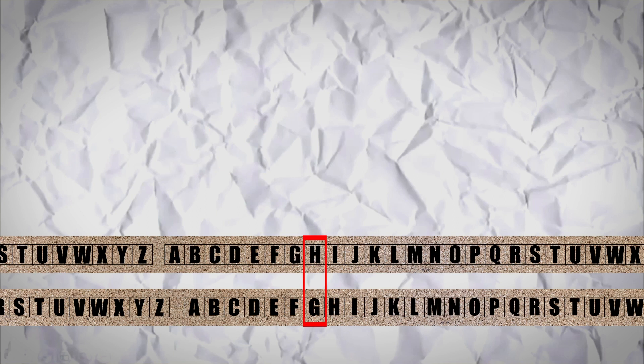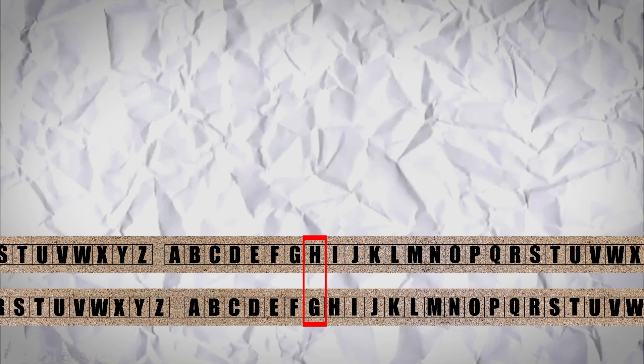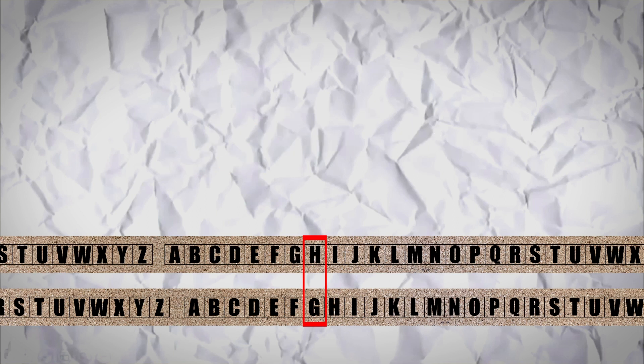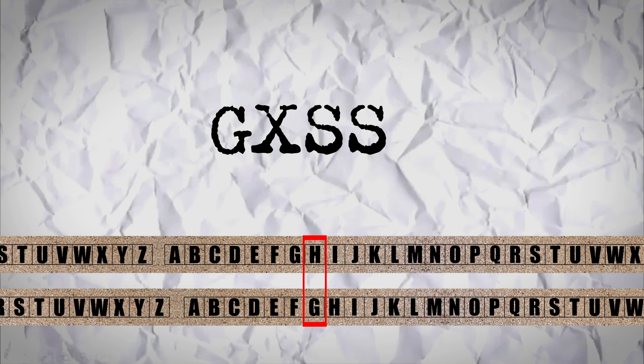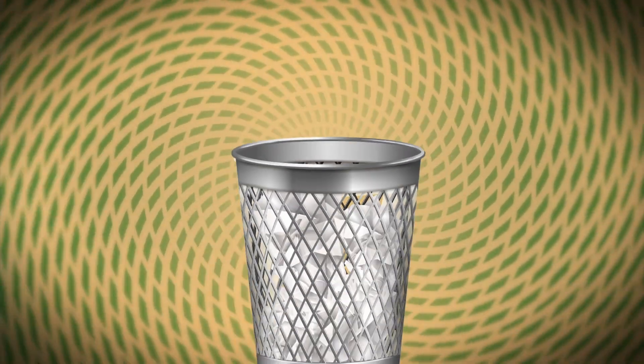If we were to use the same rule to send a message 'hello', we'd actually be sending 'GXSSB'. And if we look at GXSSB without the rule, it might seem like gibberish. But to someone who has the key to decipher it, this seemingly random arrangement of letters suddenly bears a meaning.